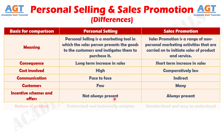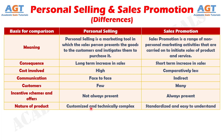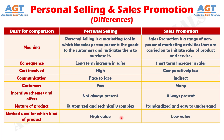Number seven: the nature of product is customized and technically complex in the case of personal selling. Whereas, the nature of product is standardized and easy to understand in the case of sales promotion. And difference number eight: personal selling is used when the product value is high and it is difficult to understand. Whereas, in sales promotion, the product value is comparatively low and easy to use.